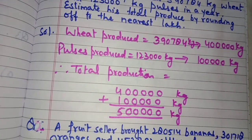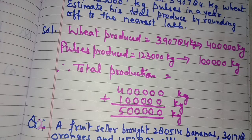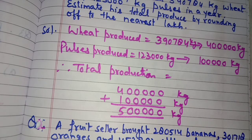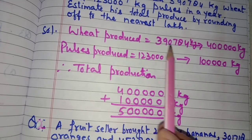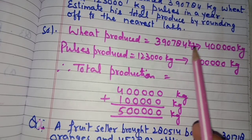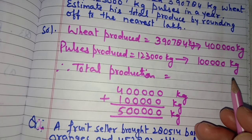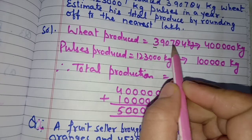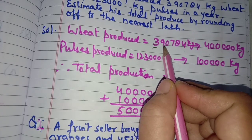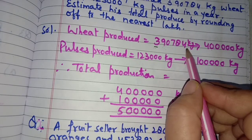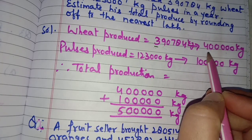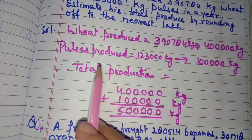The method of estimation is the same as in the previous exercise, but one thing to keep in mind: the numbers used for calculation will be the rounded-off numbers, not the actual numbers. Wheat produced: 3,90,784 kg. We round off the lakhs place — the digit to its right is more than 5, so 3 becomes 4, and all digits to the right become zeros. So it is 4 lakh kg.